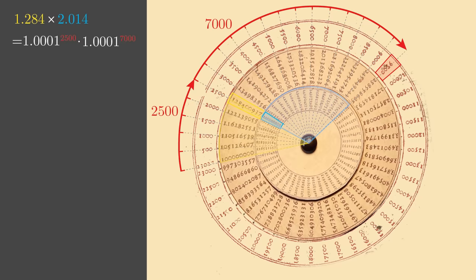Our slide rule is adding the red numbers 2,500 and 7,000 for us, which is equivalent to solving our multiplication problem of 1.284 times 2.014, giving the correct answer 2.586.